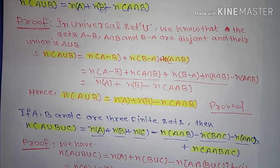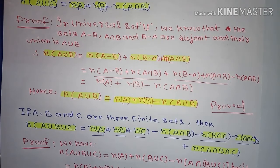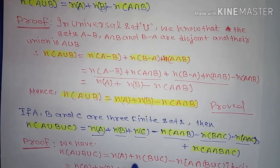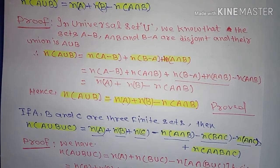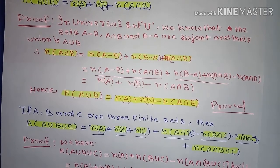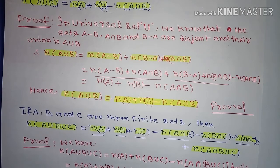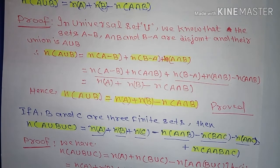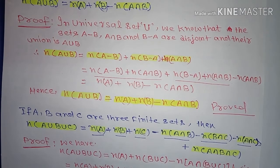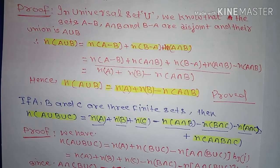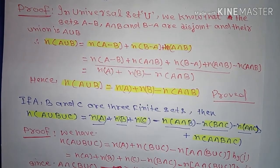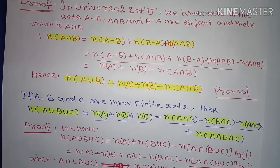We expand n(B union C) to get n(B) plus n(C) minus n(B intersection C). Then we open A intersection (B union C): following the distributive law, A intersection (B union C) equals A intersection B union A intersection C. Hence n(A intersection B union C) equals n(A intersection B) plus n(A intersection C).